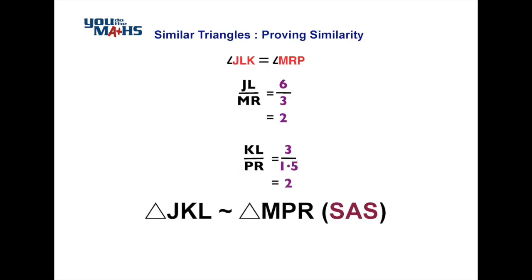Summarizing, we can see a matching angle between the pairs of sides, and the sides on the large triangle divided by the sides on the small triangle give a matching ratio of 2 to 1. So the two triangles are similar, and the similarity condition is side-angle-side.